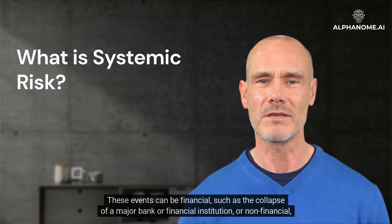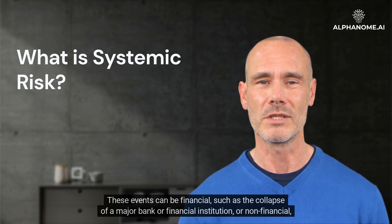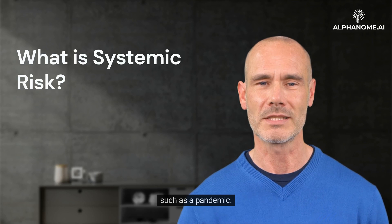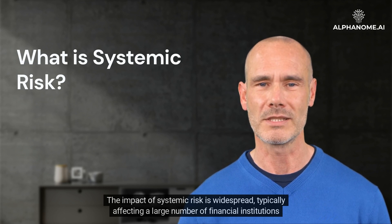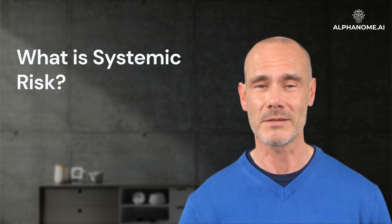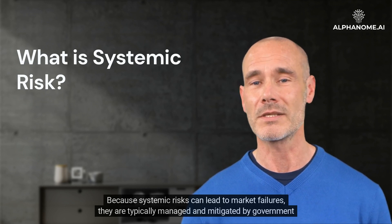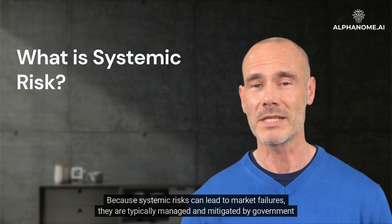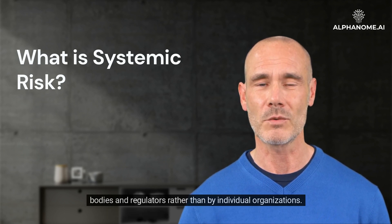These events can be financial, such as the collapse of a major bank or financial institution, or non-financial, such as a pandemic. The impact of systemic risk is widespread, typically affecting a large number of financial institutions or markets within a short time span. Because systemic risks can lead to market failures, they are typically managed and mitigated by government bodies and regulators rather than by individual organizations.